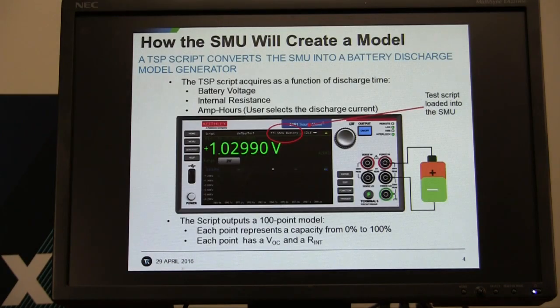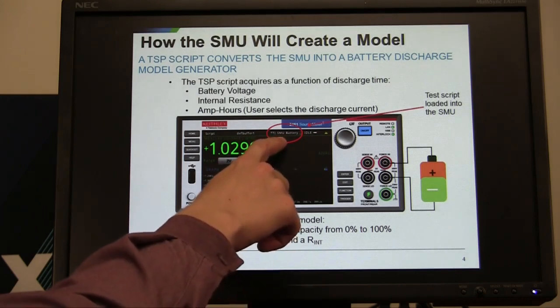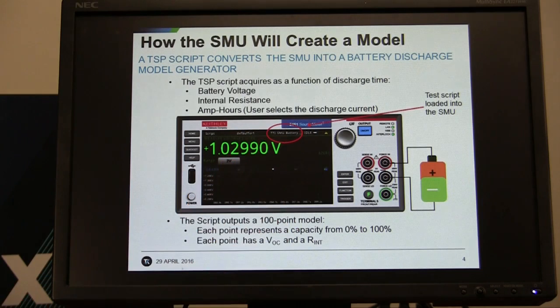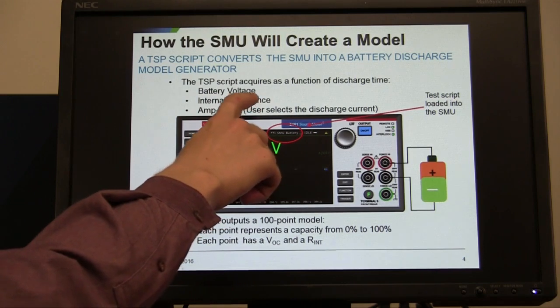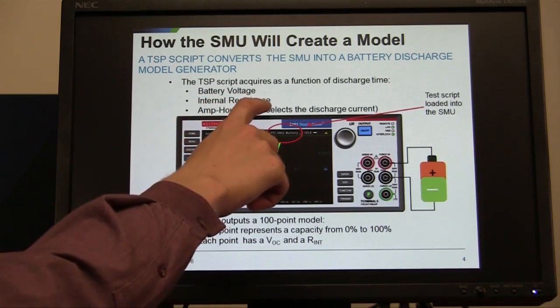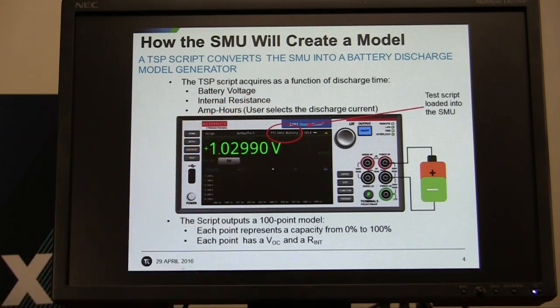So how is the SMU going to create this model? Essentially, you're going to load a TSP script from the front panel and that TSP script will run and collect battery voltage, open circuit voltage, internal resistance, and amp hour capacity data from the battery.